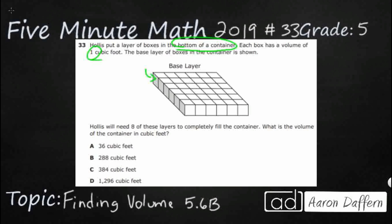So this is your base layer, and so what this means is that we're going to have a container that just kind of goes up like this. If we were to kind of continue, and we're wanting to see how many boxes we can stick in here. So Hollis needs eight of these layers to completely fill the container. So what is the volume?